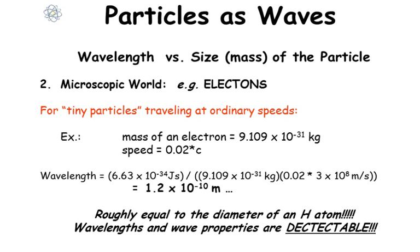So what about the microscopic world—for example, electrons? For tiny particles traveling at ordinary speeds, the mass of an electron is 9.109 times 10 to the minus 31 kilograms, and maybe it's going just 2% the speed of light.